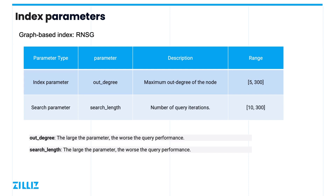There are two parameters that affect the query performance of graph index RNSG. One is the index building parameter out_degree, which is the out-degree of each point when building the graph, and the other is the parameter search_length when querying. When querying, the distance of each point's out-degree neighboring nodes will be calculated in turn with the navigation point of the graph as the starting point, and search_length will be iterated at least once to get the final result. Therefore, the larger the out_degree and search_length are, the more computationally intensive the query is and the worse the performance, but the higher the recall rate.